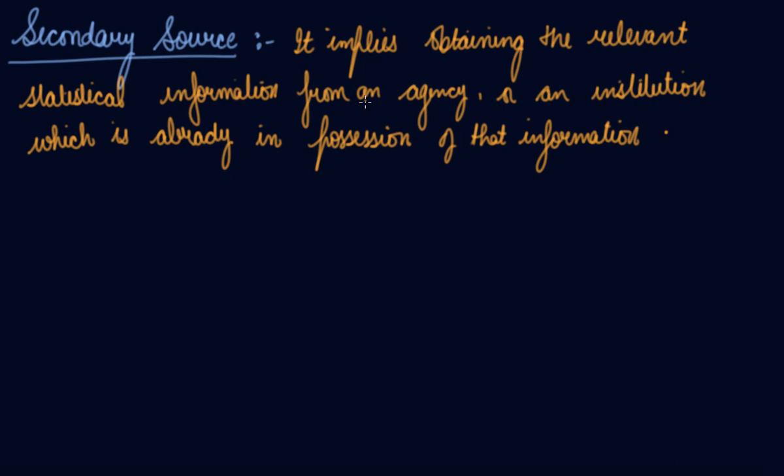Data relating to the quality of life of people in your town may have already been collected by the state government. You can simply go to the concerned department of the state government and request the desired information. If you get that data, it is the secondary source to you — not the primary source — because you have gone to a government institution and taken the data from them. You then apply statistical methods to draw results. So there are two sources: primary, which is first-hand information, and secondary, which is not first-hand information.